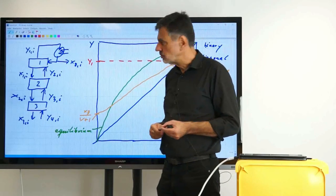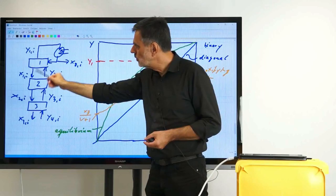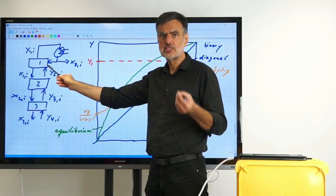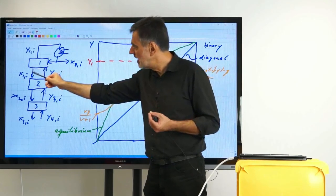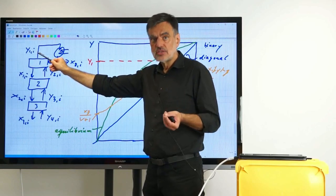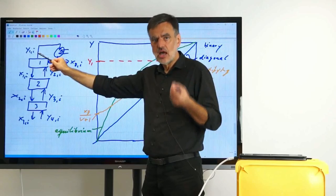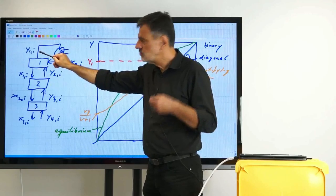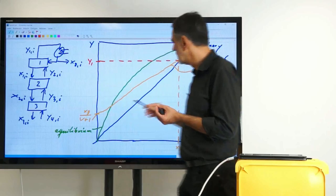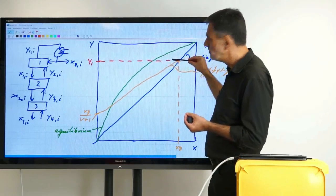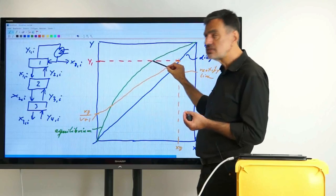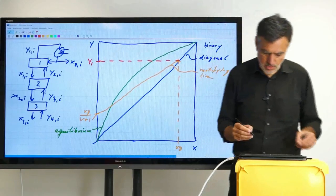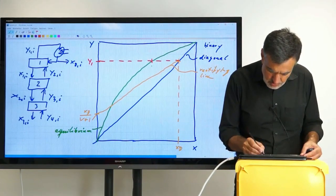What can we relate Y_1 to? We relate it to X_1, because in a theoretical stage the leaving streams are in equilibrium. X_1 and Y_1 carry the same index — they leave the same stage — so they must be in equilibrium. We find X_1 exactly where Y_1 intersects the equilibrium curve.